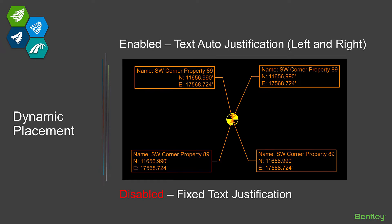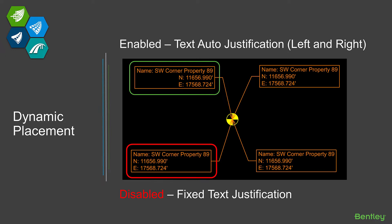The third option is dynamic placement, which overrides or performs an auto justification — a left/right justification — depending on the placement of the label. The two labels at the top are enabled; the two at the bottom are disabled. This label was set up with a left justification for the text. Notice that even though the justification was left, when auto text justification was enabled and I placed the label connecting my leader to the right side, it automatically swapped to right-justified text. When this option was disabled, the text was placed still left-justified even though the leader was coming off the right side.